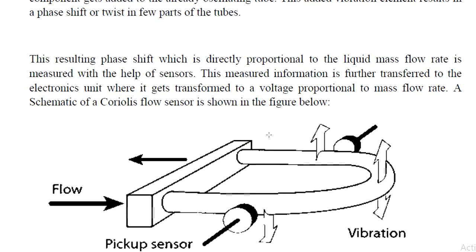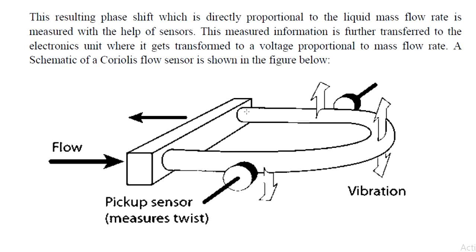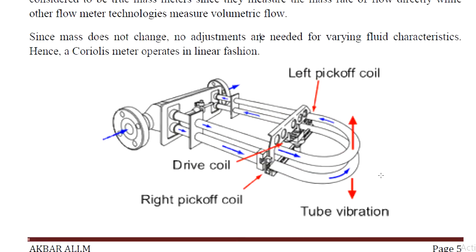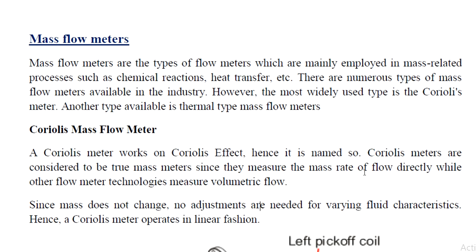Looking at a schematic of the Coriolis flow sensor: this is the U-shaped tube; this is the fluid flow; this is the vibration element; this is the pick-up sensor; and this is the measure of vibration. These components together are used to monitor and control the flow measurements.